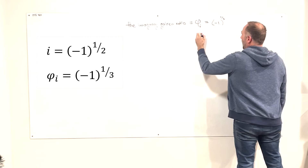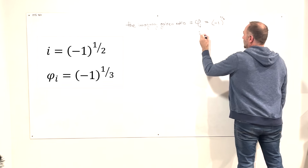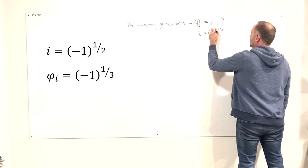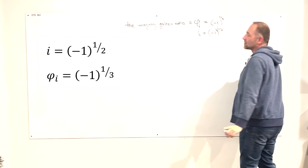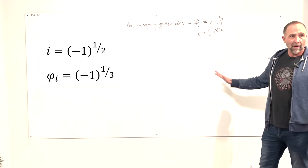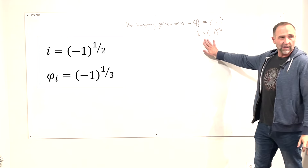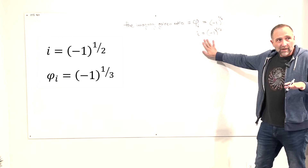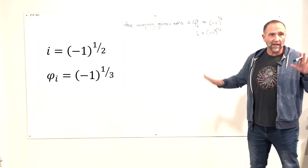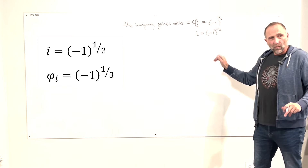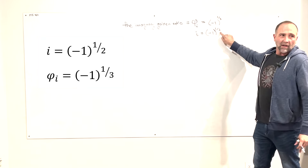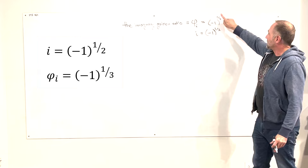Compare this to i, which is equal to negative one to the one-half. The imaginary golden ratio is extremely geometric in the same way that i is geometric. But there is a difference: where i depends on multiples of two, the imaginary golden ratio depends on multiples of three.